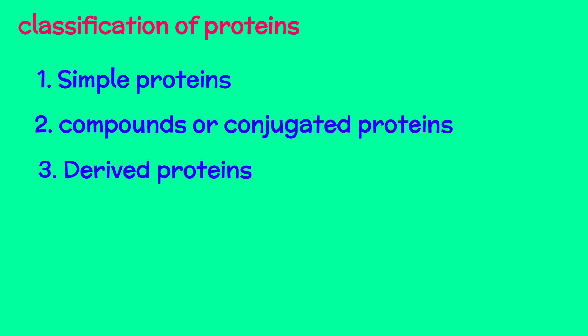And the third one is derived proteins. These are proteins which are produced by the partial digestion of simple or conjugated proteins. They may be proteoses, metaproteins, and coagulated proteins.